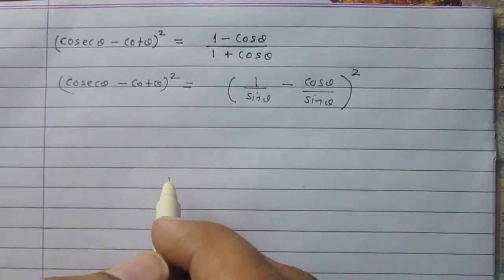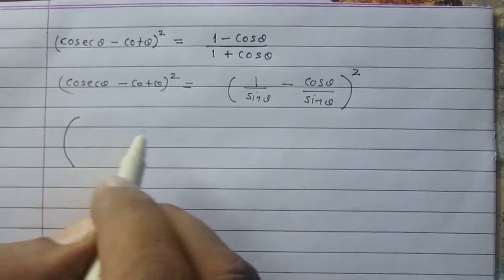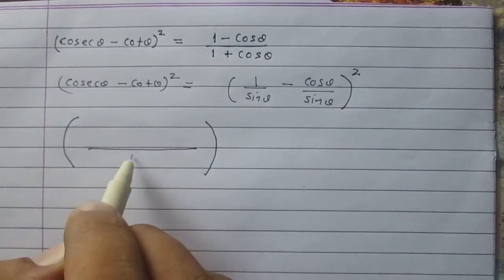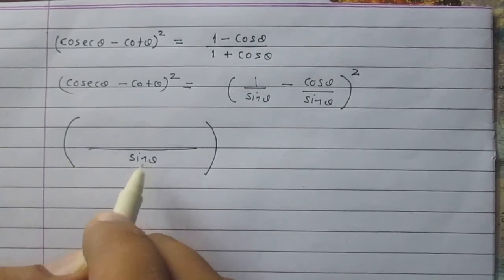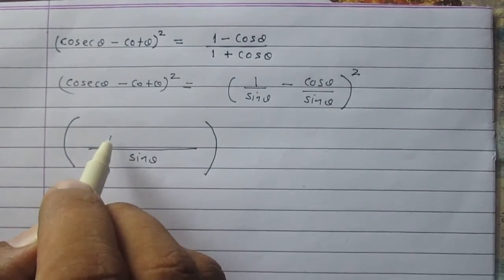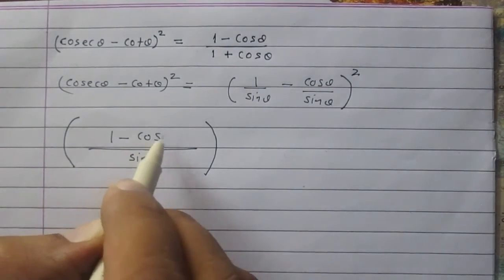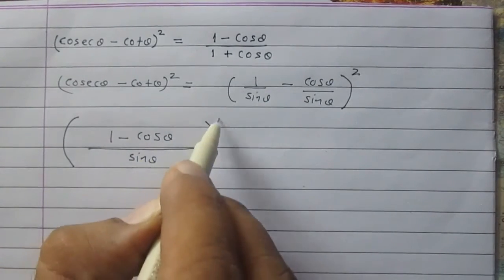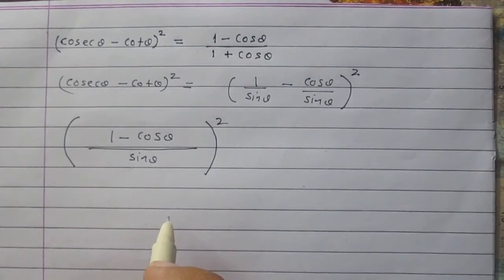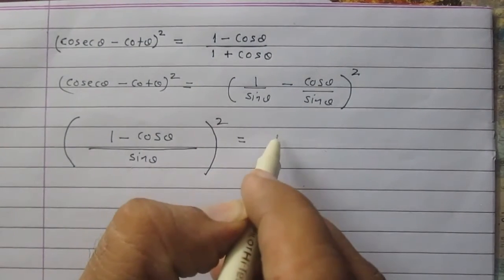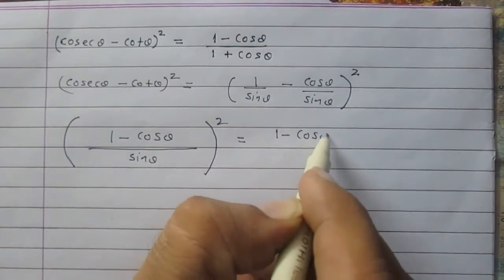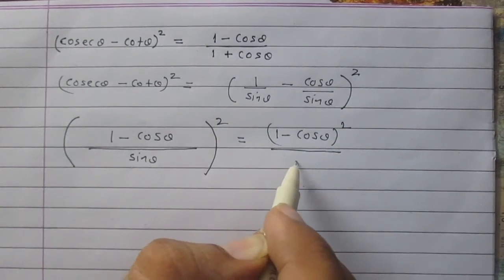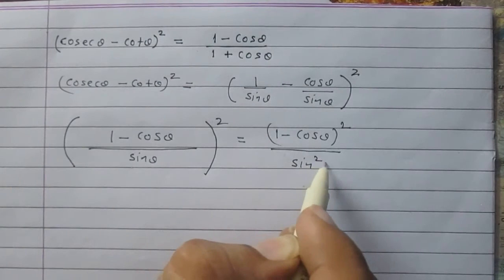We can simplify it as sin theta in the denominator and in the numerator you will get 1 minus cos theta. So it is 1 minus cos theta upon sin theta whole square. Again you can write this as 1 minus cos theta whole square divided by sin square theta.